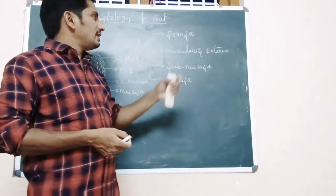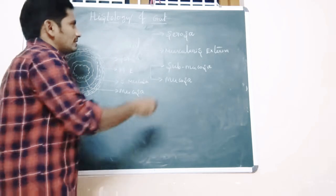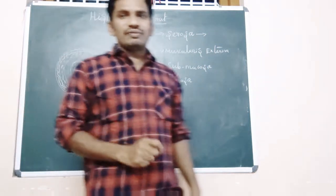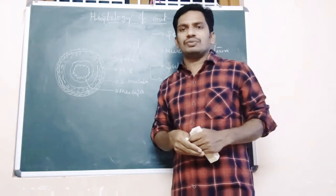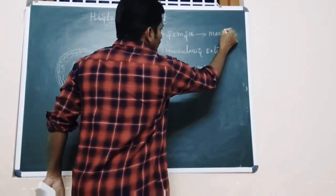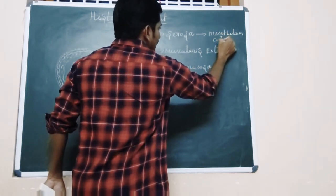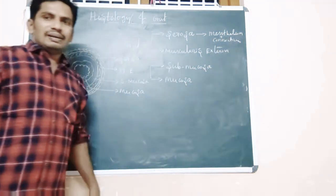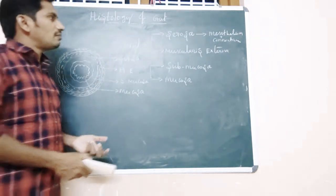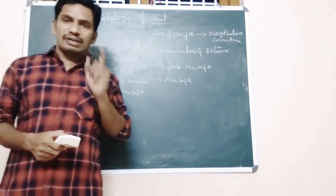The serosa is the outermost layer, which is made up of mesothelium plus some connective tissue. These two are the main compositions of the serosa. The muscularis externa, which comes next, is made up of smooth muscles.